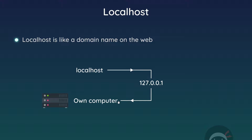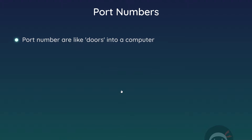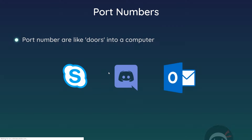There's also the concept of port numbers. A port number represents a specific channel, gateway, or port on our computer that a certain piece of software or server should communicate through. On your computer you probably have a lot of different software that connects to the internet — Skype, Discord, mail clients — and they all communicate via different port numbers to keep information separate from one another.